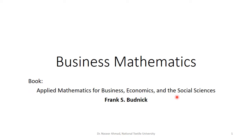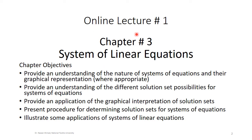The business mathematics book name is Applied Mathematics for Business Economics Online. This is online lecture number one, chapter number three: System of Linear Equations. The chapter objectives are to provide an understanding of the nature of systems of equations and their graphical representation, different solution set possibilities, graphical interpretation of solution sets, and procedures for determining solution sets.